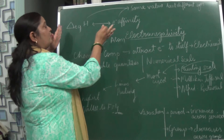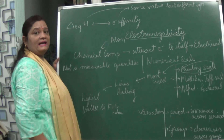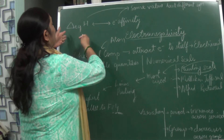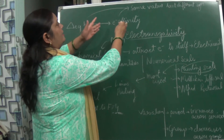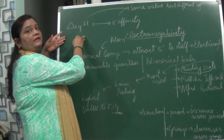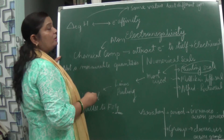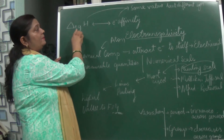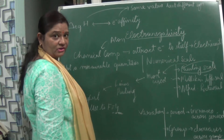One more term is electron affinity. Both electron gain enthalpy and electron affinity have the same magnitude but opposite signs. If electron gain enthalpy is negative in nature, then electron affinity will be positive in nature. For example, neon has a positive electron gain enthalpy but its electron affinity will be negative in nature.